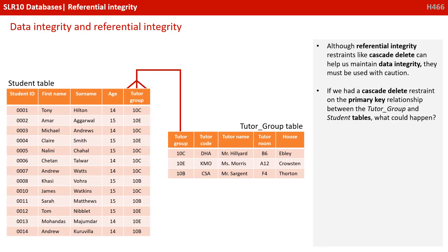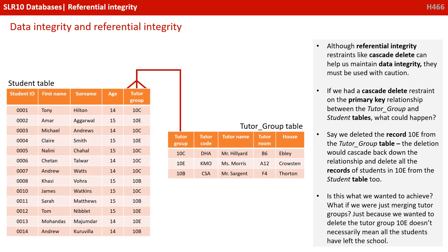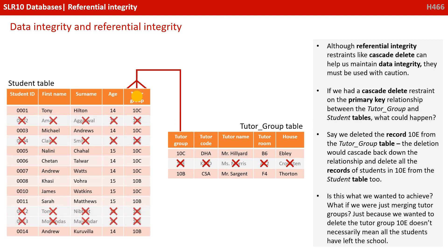Although referential integrity constraints like cascade delete can help us maintain data integrity, they must be used with caution. If we had a cascade delete constraint on the primary key relationship between the Tutor Group and Student tables, say we deleted the record 10E from the Tutor Group table, the deletion would cascade back down the relationship and delete all records of students in 10E from the Student table too. Is this really what we want to achieve? What if we're just merging tutor groups? Just because we want to delete Tutor Group 10E doesn't necessarily mean all the students have left the school. So caution does have to be used.